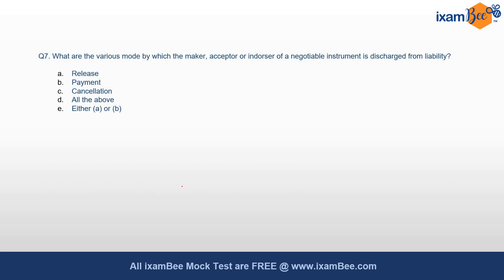The next question: what are the various modes by which the maker, acceptor, or endorser of a negotiable instrument is discharged from liability? The answer is all of the above. Discharge from liability of the maker, acceptor, or endorser of a negotiable instrument is by way of payment, release, or cancellation, as given under Section 82 of the NI Act.